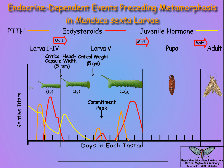Concurrently, the corpora allata produce a small amount of juvenile hormone acid that is converted to active juvenile hormone in abdominal epidermal cells by a tissue-specific juvenile hormone oxidase. This tissue-specific juvenile hormone synthesis allows the abdominal epidermal cells to produce pupal cuticle at the larval-pupal molt, but prevents premature metamorphosis by adult-specific tissues such as imaginal discs.